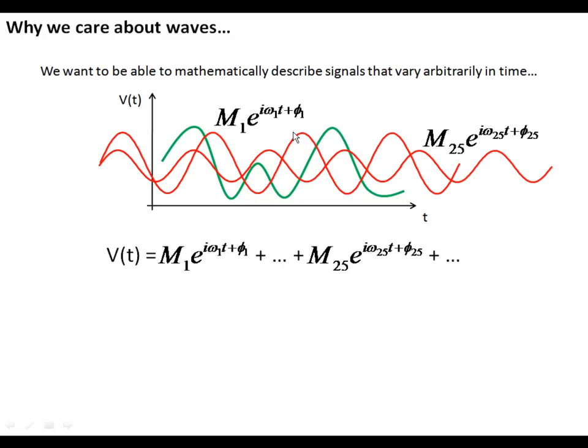And so the way we write this mathematically is we say the time domain signal is a sum of a bunch of waves. And you've seen this in your other classes. We can convert back and forth between time and frequency with a Fourier transform.